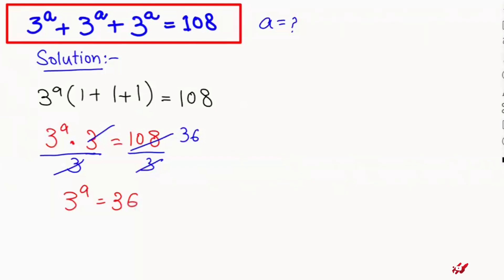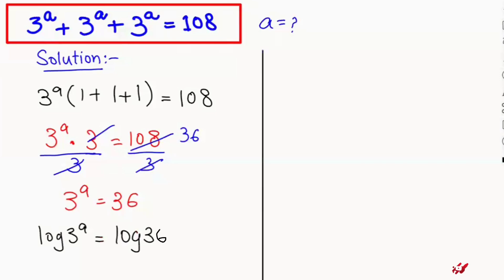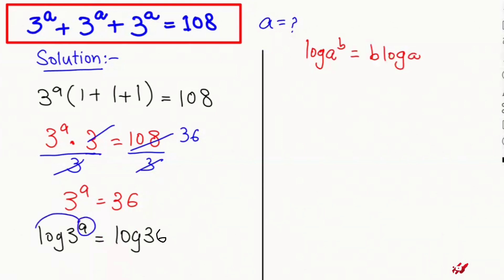Now in the next step, I'm going to take log of both sides: log of 3 to the power of a is equal to log of 36. Here I'm going to apply the logarithmic rule that is log of a to the power of b equals b times log of a. So I'm going to bring the power in front and write: a times log of 3 is equal to log of 36.